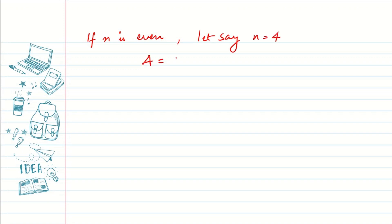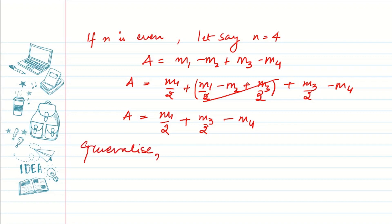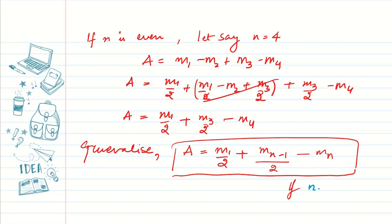If n is even, say n = 4, the net amplitude is m1 − m2 + m3 − m4. Writing this in the same bifurcated form, the middle terms cancel and we are left with m1/2 − m4. Generalizing, for even n the net amplitude is m1/2 − mn/2, where n−1 gives the preceding odd term. This completes the brief explanation of half period zones.